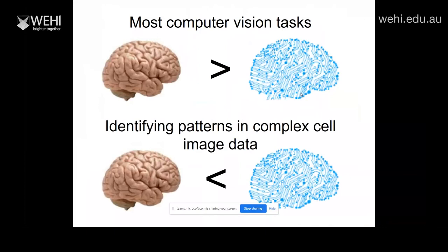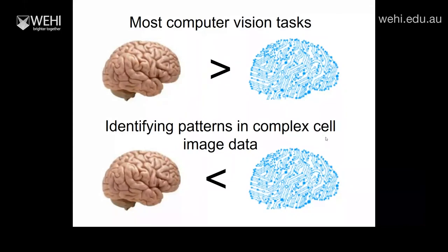One of the cool things about this field is that in standard computer vision — and my PhD came from a computer vision lab — the human mind is the gold standard. You want to get as good as a human at understanding a scene. But in biological imaging data, I think it's one of the only fields where the computer can actually do better than humans. I'm going to show you a few examples: finding patterns in complex cell image data that the human eye cannot perceive.